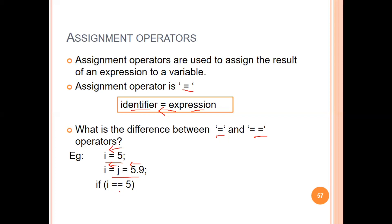The double equal-to operator compares the left-hand side and right-hand side. If they are equal, true (1) is returned; if not equal, false (0) is returned. For example, if i is 5 and we compare 5 equal-to 5, the condition is true and 1 is returned.